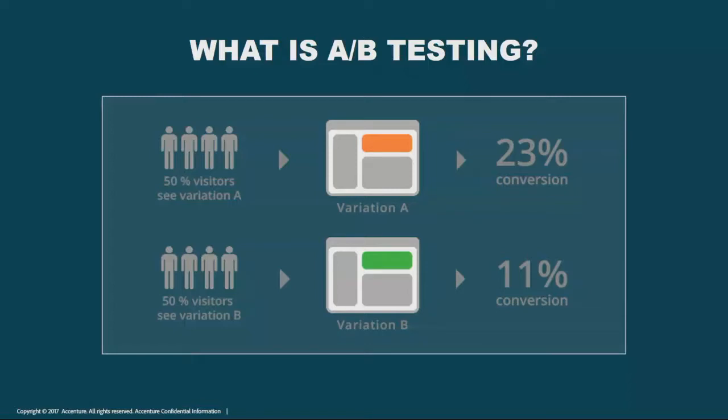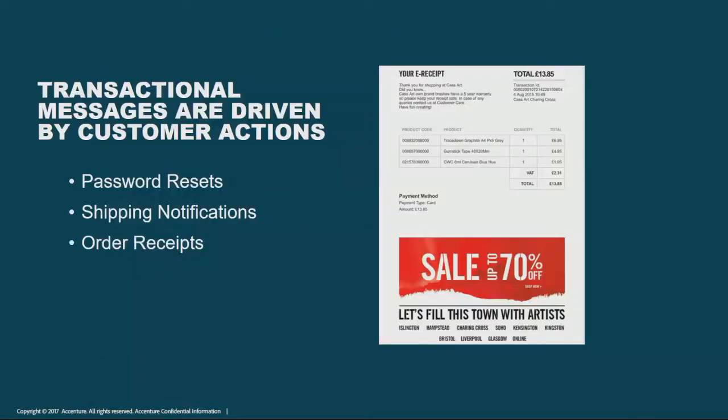This gets a little trickier with transactional messages. Transactional messages are driven by customer actions — that could be password resets, shipping notifications, order receipts. In this example, we have an e-receipt, and we want to inject some marketing material into this email delivery. That's easy if we want to include static marketing material, but if we wanted to do an A-B test on that, it becomes a little more difficult.